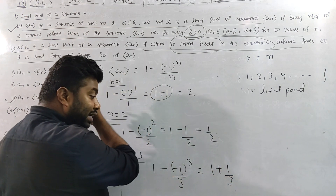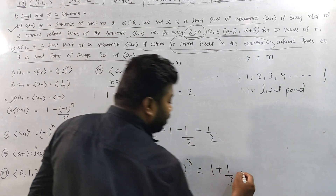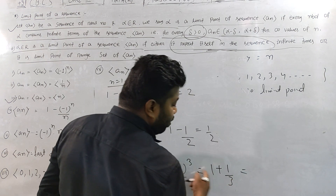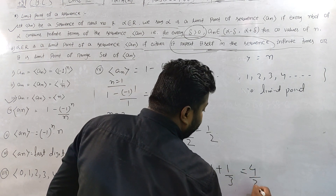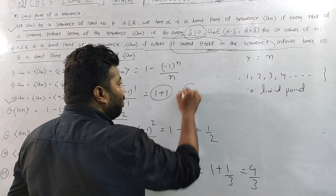That gives 1/3 added to 1 gives 4/3. So the result is 4/3.